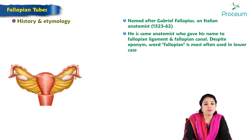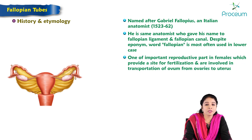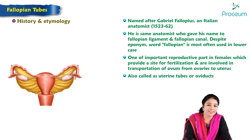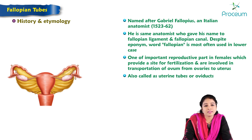The fallopian tubes are one of the important reproductive parts in females, providing a site for fertilization and involved in the transportation of the ovum from the ovaries to the uterus. They are also called the uterine tubes or the oviducts. In this lecture, we will discuss in detail the gross anatomy, histology, and function of fallopian tubes followed by relevant clinical anatomy.